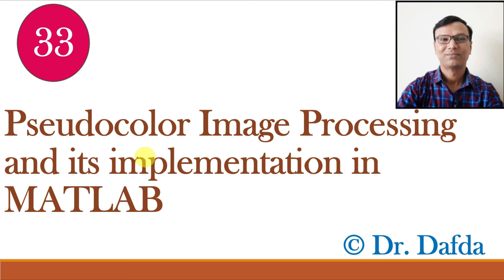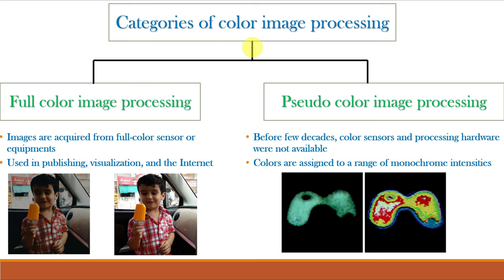Starting with the slide that we saw for the 31st video class of DIP, namely color fundamentals. Here we saw that there are two types of color image processing: full color image processing and pseudocolor image processing. Full color image processing is one where the image is acquired using full color sensors and processing is done.